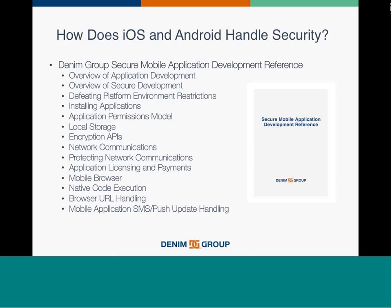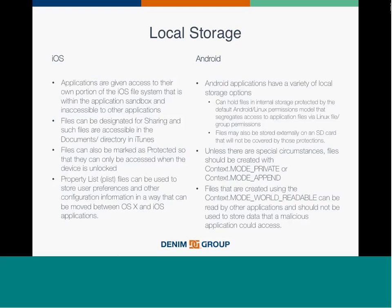One example from the 14 is local storage. iOS and Android couldn't be more different. iOS has a sandbox that is inaccessible to other applications. It interacts with the iTunes client, and you can mark files as protected so they can only be accessed when the device is unlocked. On the Android side, you have lots of storage options, which opens up more attack surfaces. For those who are Linux people, you can apply Linux security models to application files using group permissions — however, with SD cards, those protections will not be covered.